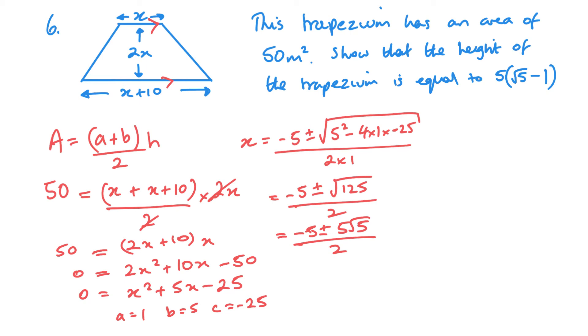Okay, so as I was saying, the height, that is a distance, it can only be positive. So, that height that we're looking for has to be this minus 5 plus 5 root 5 over 2. So, that's the value of x that I'm dealing with. Now, the height is 2x, so I need to multiply this by 2. So, the height is equal to 2x. So, that's 2 lots of minus 5 plus 5 root 5 over 2. Now, I can see the 2s will cancel. So, minus 5 plus 5 root 5.